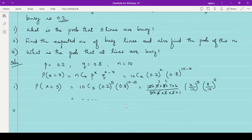Then second is find the expected number of busy lines and also find the probability of this number. Means you need to find the expected number of busy lines. Means you have to find the average number of busy lines. So expected number of busy lines